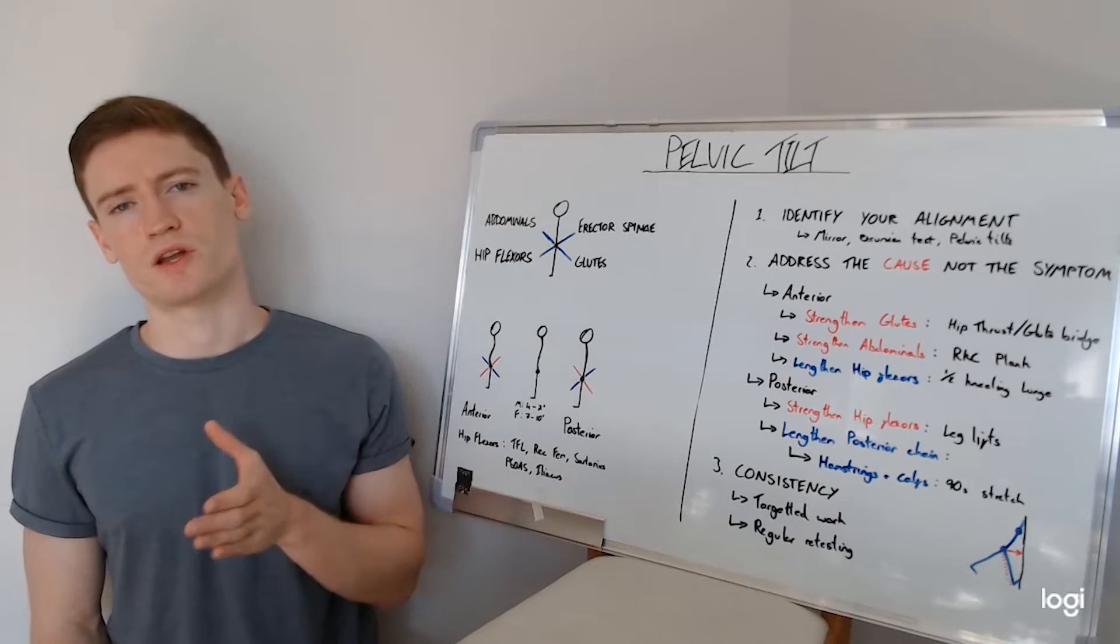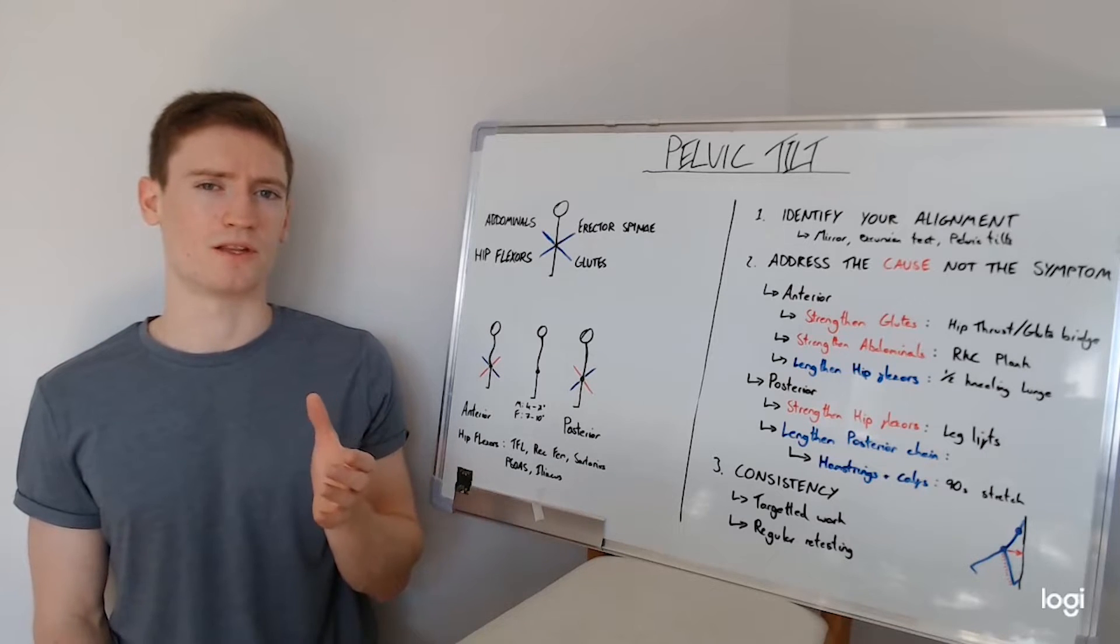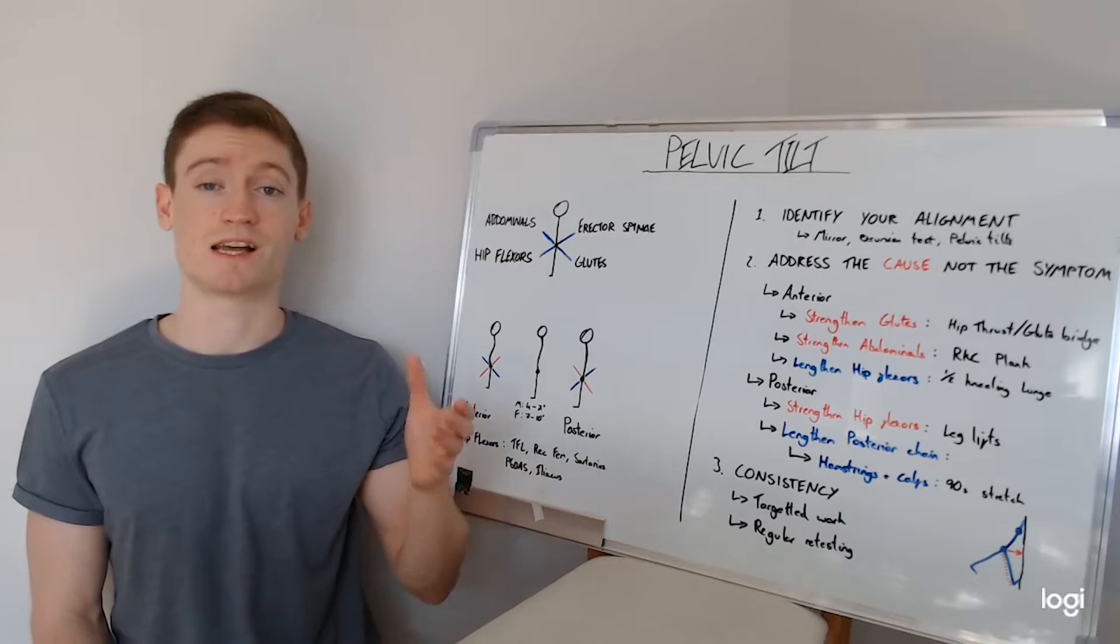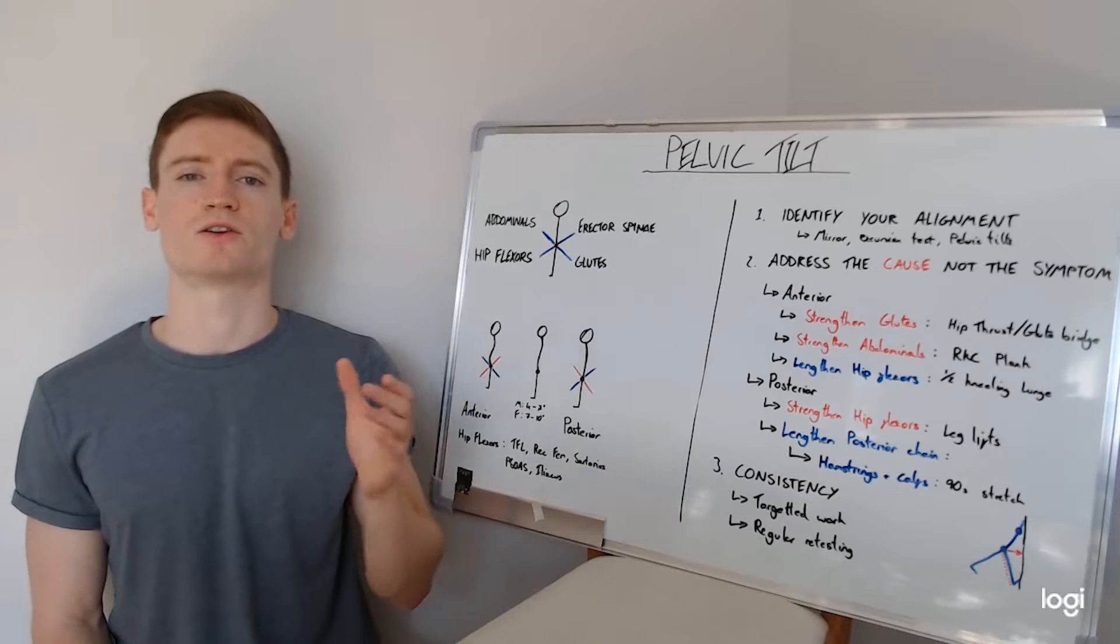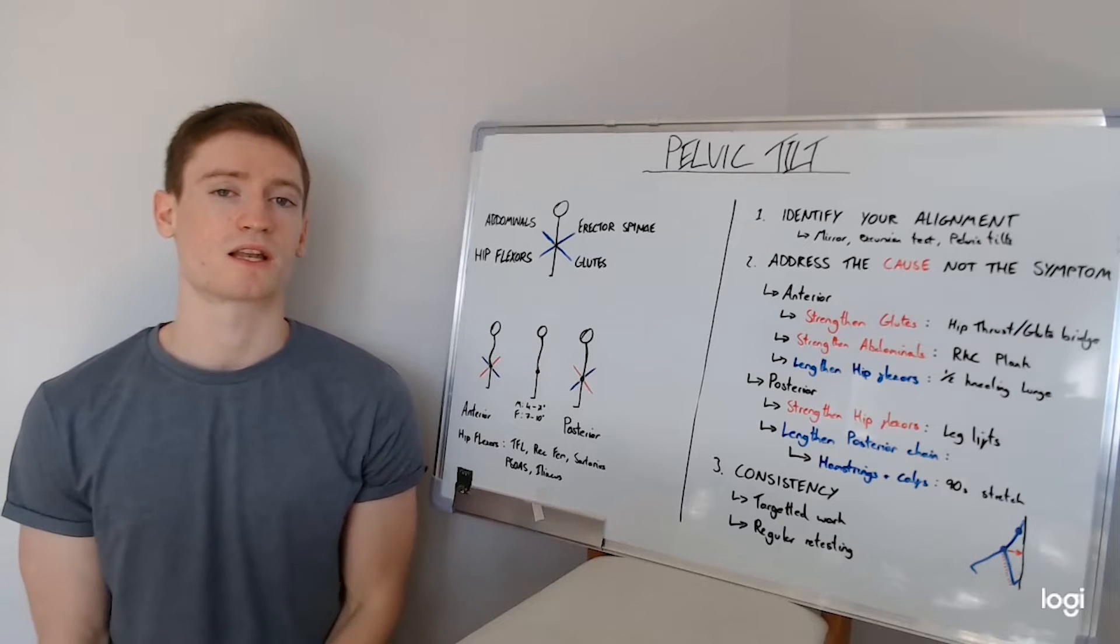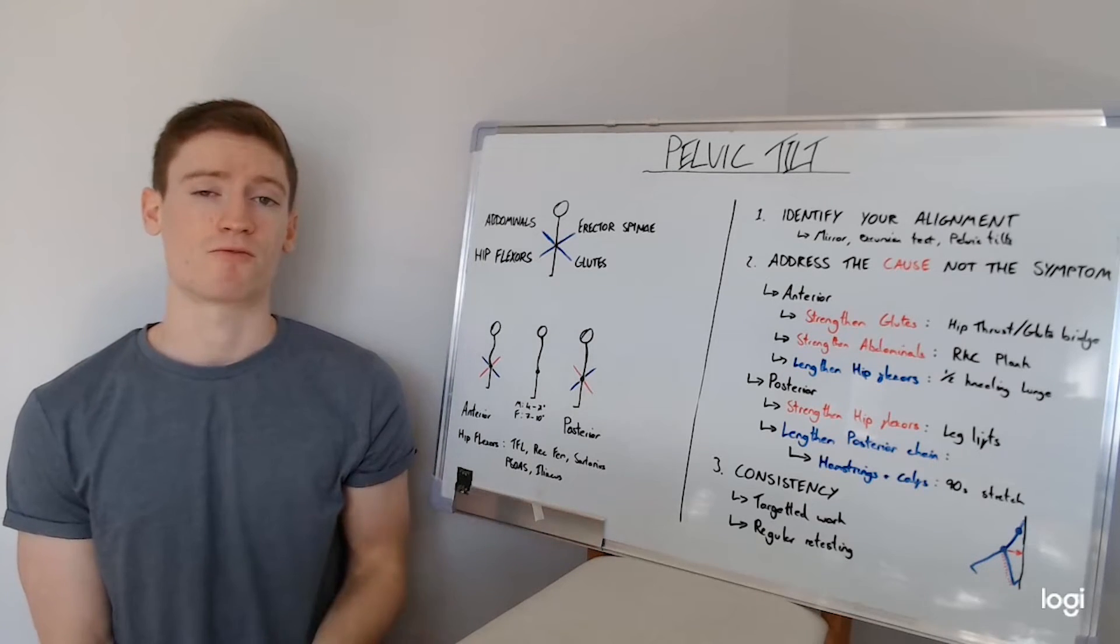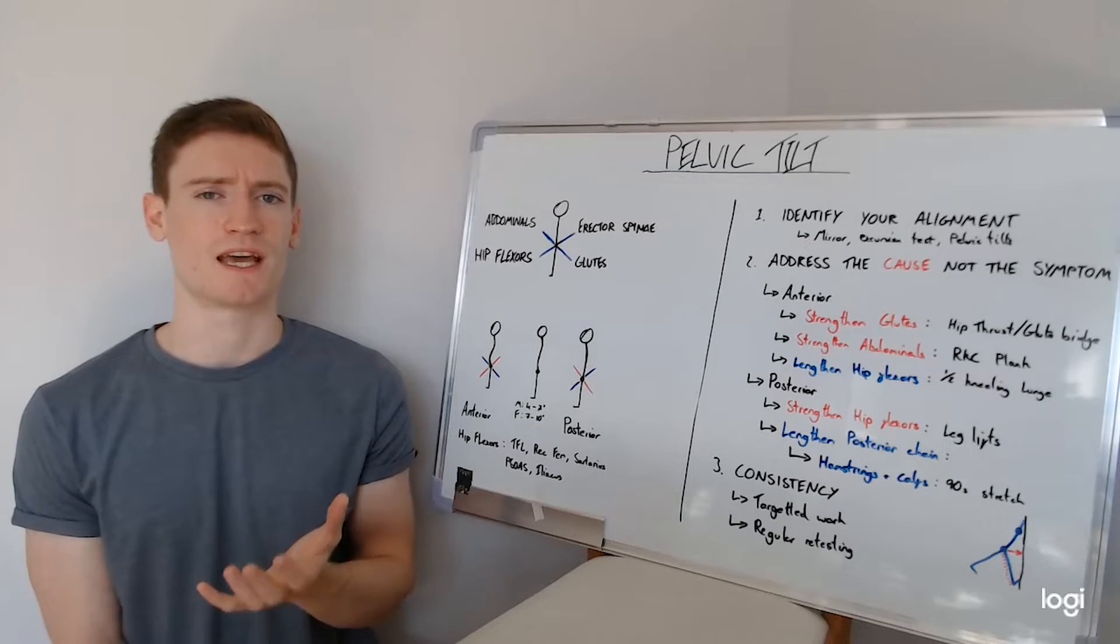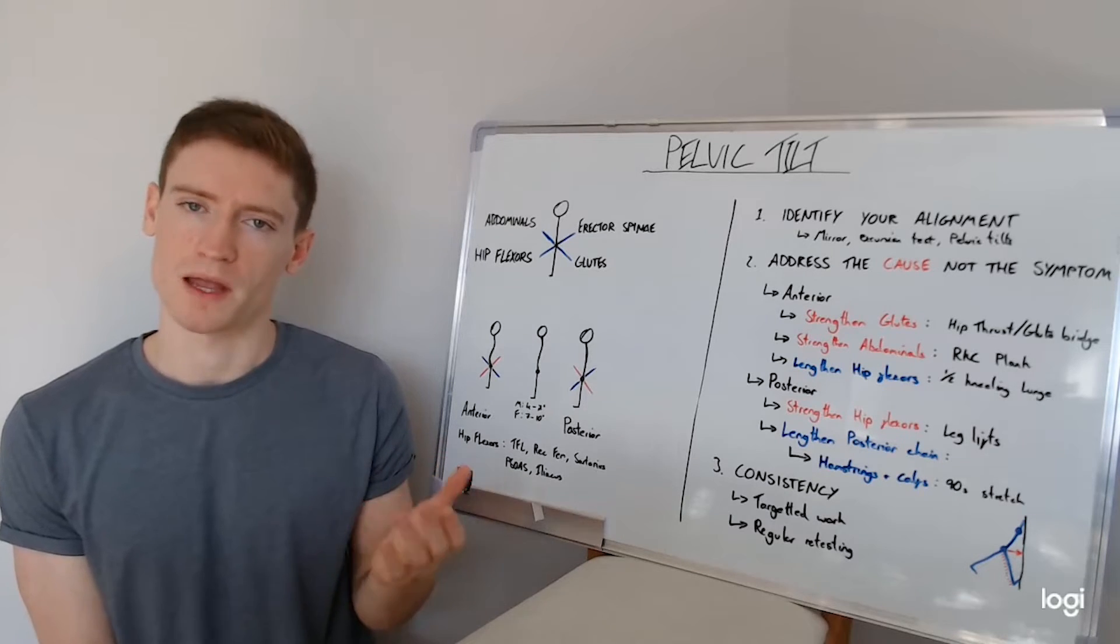Alongside that, we want to then also strengthen the abdominals, but it's important that we don't also strengthen the hip flexors because they're already tight. They're already contributing into this anterior pelvic tilt. So you actually want to be very careful about the movements you choose. Something like a lying leg raise, which also has the hip flexors engaged, may actually compound the problem and make it worse.